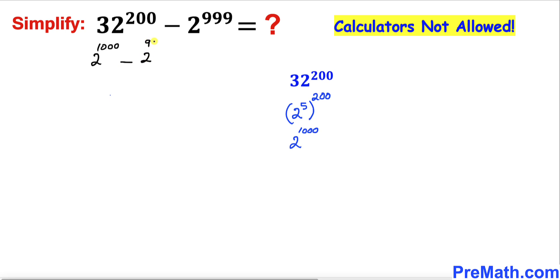Now we can rewrite 2 to the power 1000 as 2 times 2 to the power 999. We can write this as 2 times 2 to the power 999.